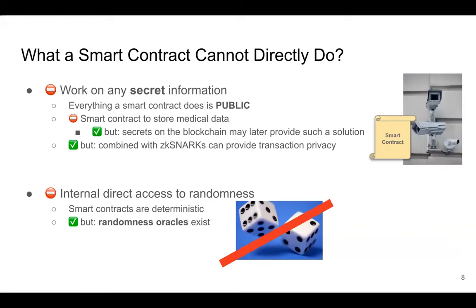Two other things smart contracts cannot do. First, a smart contract cannot work on any secret information. Everything on the blockchain is completely public — there is no secrecy whatsoever. Everything you do when you call a smart contract, what the smart contract does — all of it is public. I hear a lot about using smart contracts to store medical data, which is among the most sensitive data on earth. Why would you put it on a blockchain where everything is public?